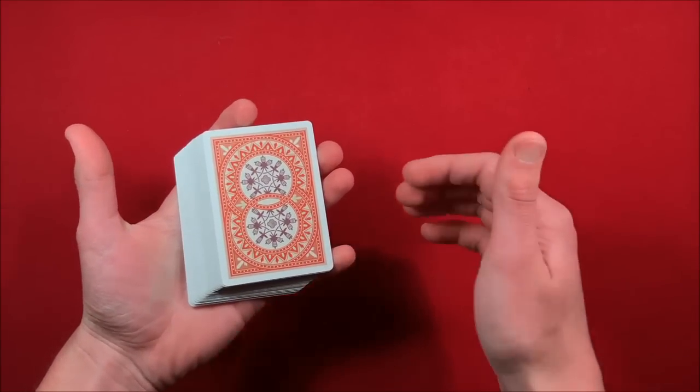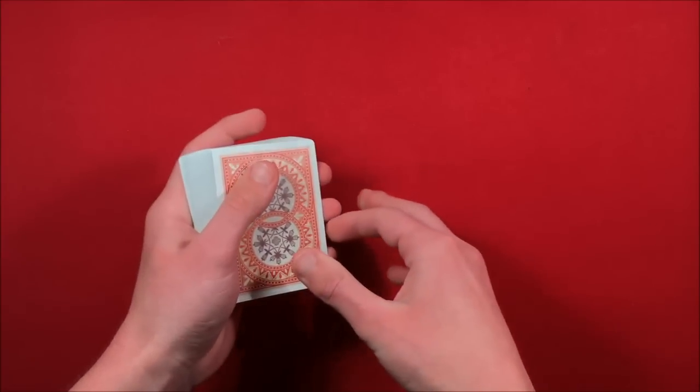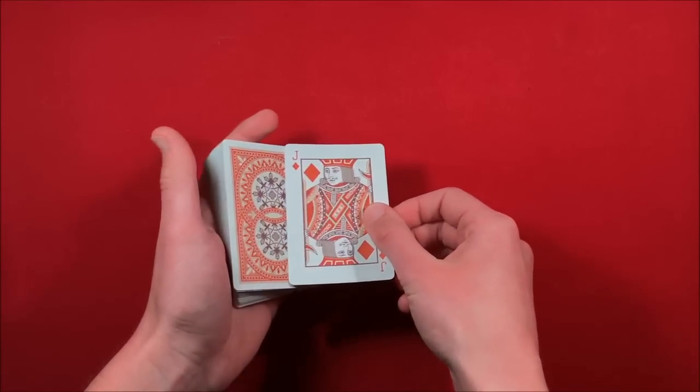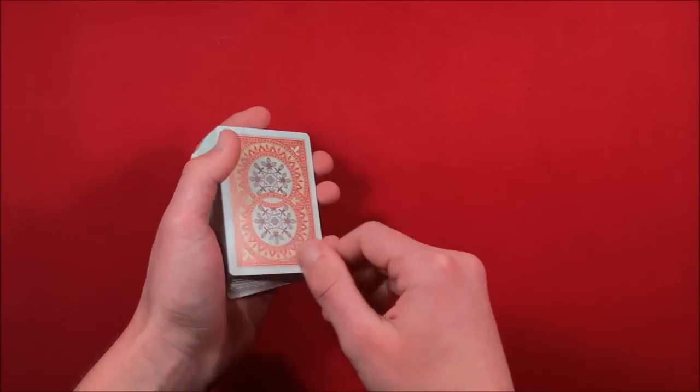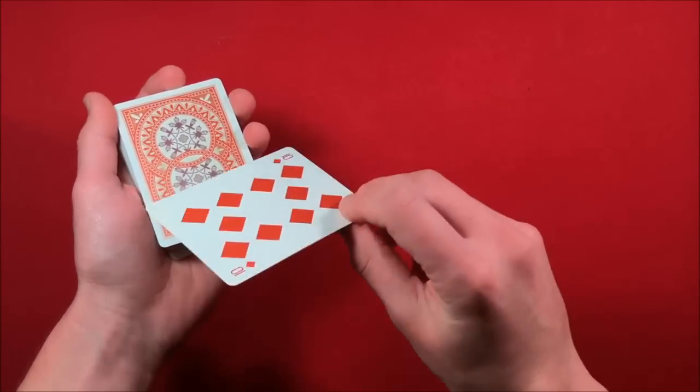Once you do the double lift, you can take it and take their card—in this case the jack of diamonds. When you do your double lift, you're putting that ten, or that indifferent card, into the middle.